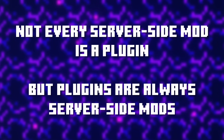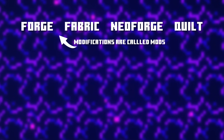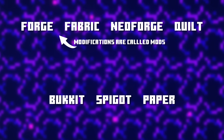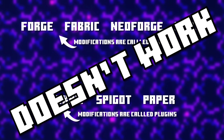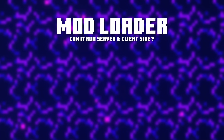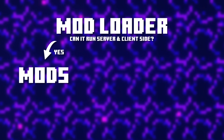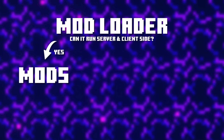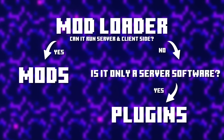You might think it's easy to distinguish by mod loaders: if a modification is made for Forge, Fabric, NeoForge, or Quilt we call it a mod, and if it's made for Bukkit, Spigot, or Paper we call it a plugin. But that doesn't fully work because there are many more mod loaders and server softwares. The easiest way to think about it: if a mod loader runs on both the client side and server side, the modifications are called mods. If there is only a modded server software with no client support at all, those modifications are called plugins.